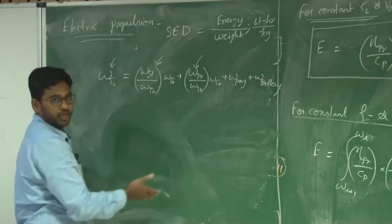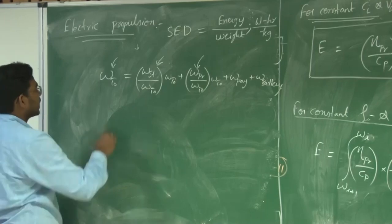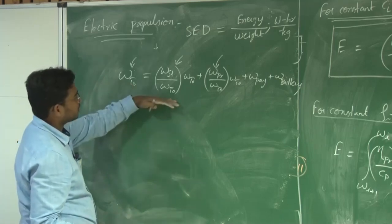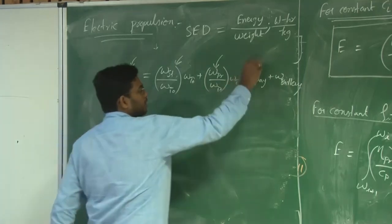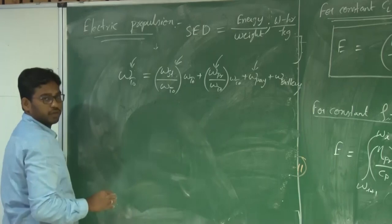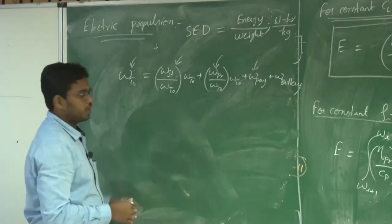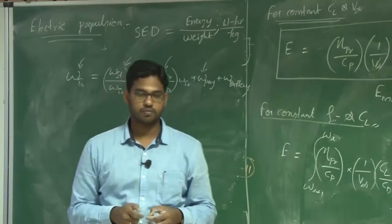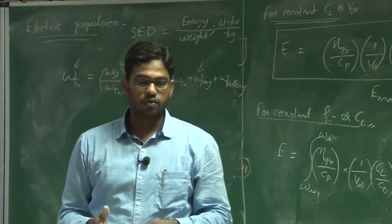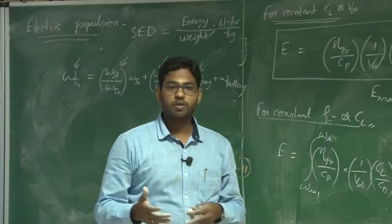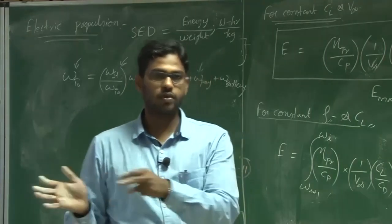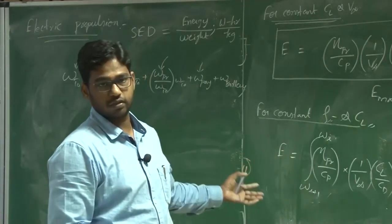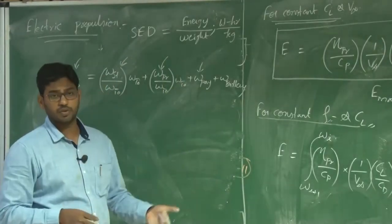We take the nearby flight vehicle performing a similar mission from the historical database for initial overall takeoff weight, structural weight, and propulsion weight. Payload is given. It is an iterative process. We will try to find what percentage of the overall takeoff weight should be the battery weight — for example, if building a 5 kg UAV, what fraction should be battery weight.